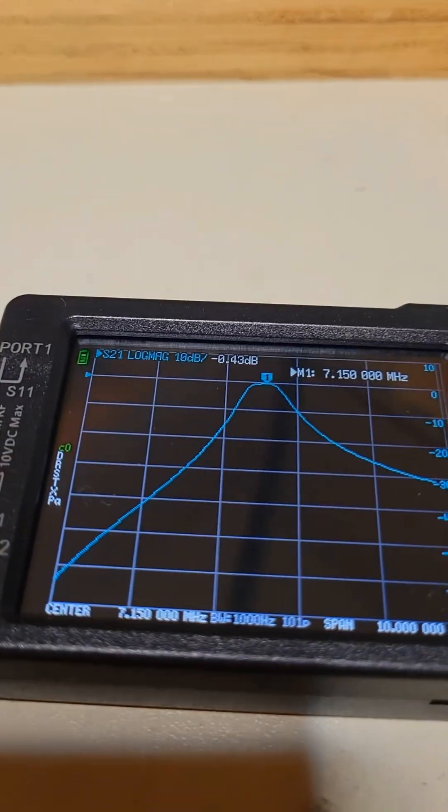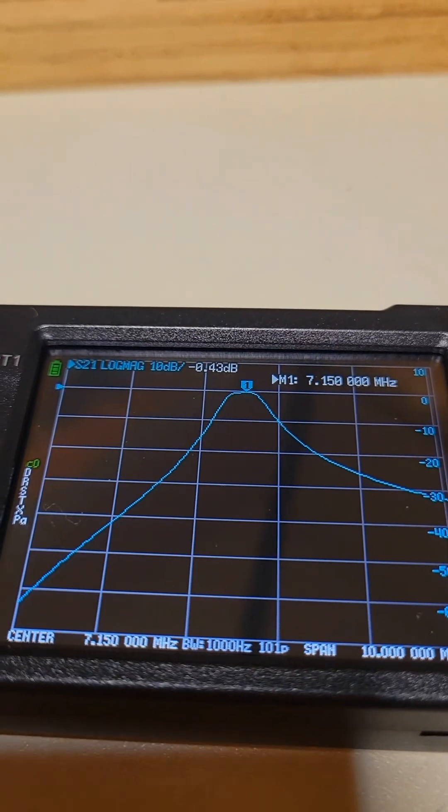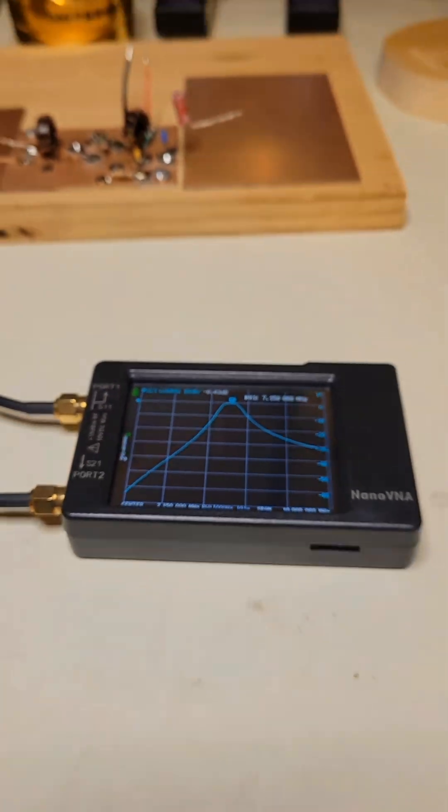After some minor adjustments with the trimmer caps, I moved the center to 7.15 MHz, and got the attenuation down to negative 0.43 dB.